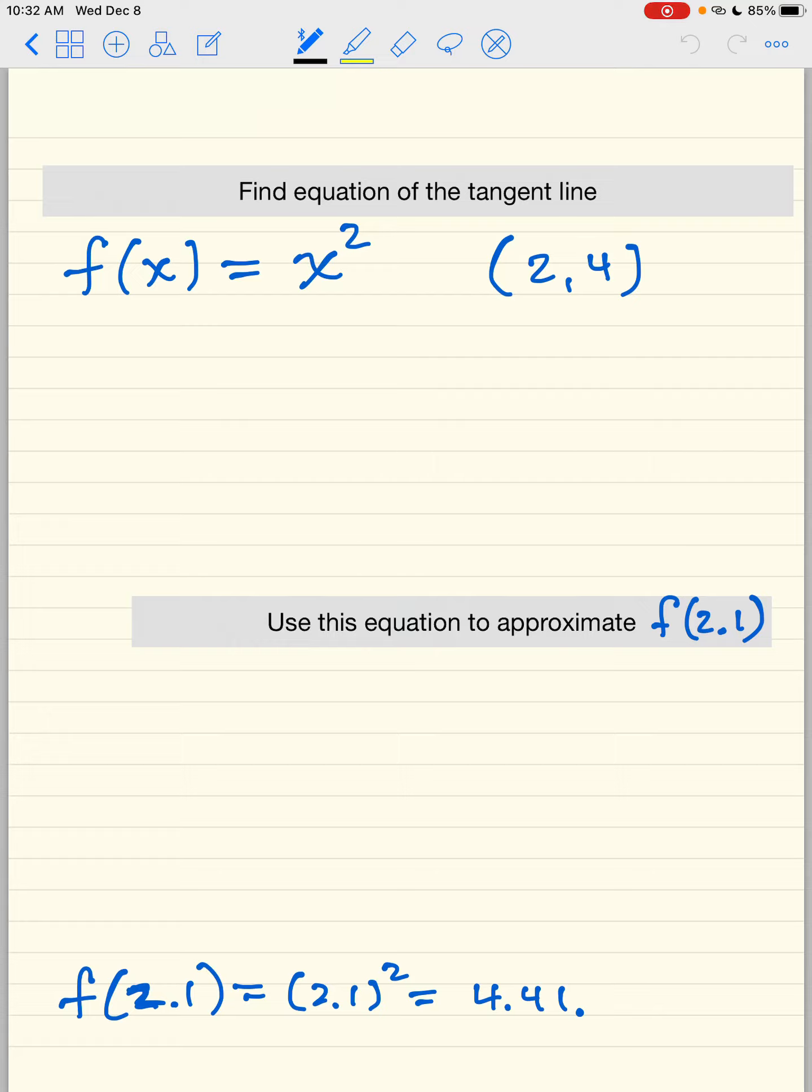All you need in order to find any line is a point, check, and a slope. We're almost there. The slope will be 2x because it says tangent line. And we're going to substitute the x to be 2, and then we're going to get this to be 4.